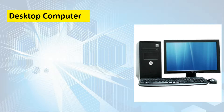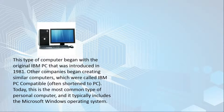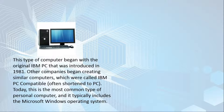The first type of computer is the desktop computer. Many people use desktop computers at work, at home, or at school. Desktop computers are designed to be placed on a desk — that's why they are called desktop. They are typically made of a few different parts including the computer case, the monitor, the keyboard, and the mouse. This type of computer began with the original IBM PC introduced in 1981. Other companies began creating similar computers called IBM PC compatible, or simply PC, which today is the most common type of personal computer.